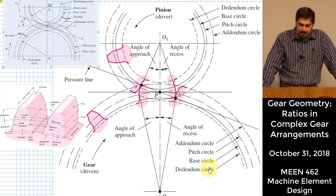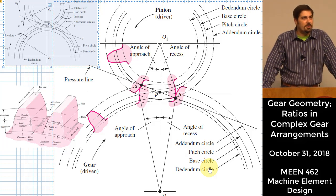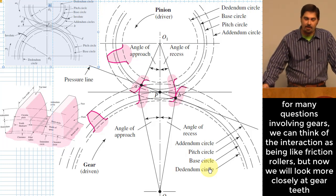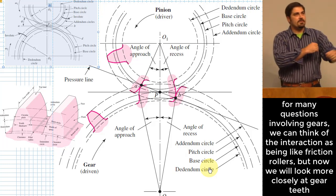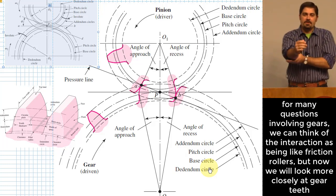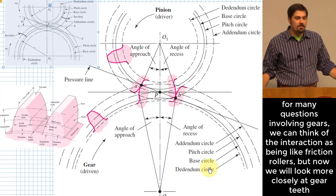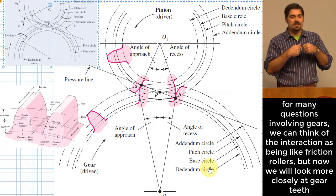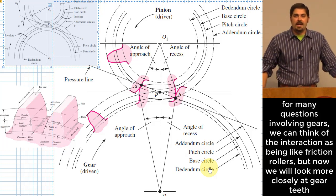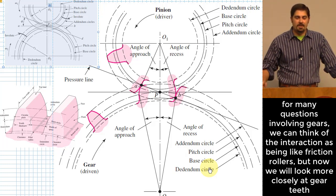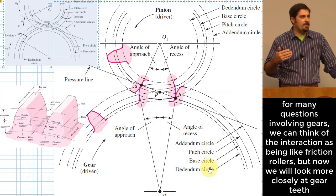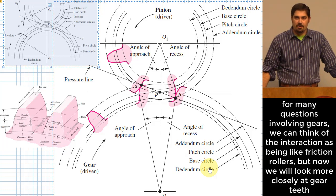There's a lot going on the screen right now, so let's talk through some of it. I want to discuss how gears mate with one another. Up till now in other classes, you've likely just ignored the teeth and pretended gears were drums rolling against each other. That's not really wrong — you can model them that way for certain questions — but at some point you do have to think about the actual shape of the gear teeth.